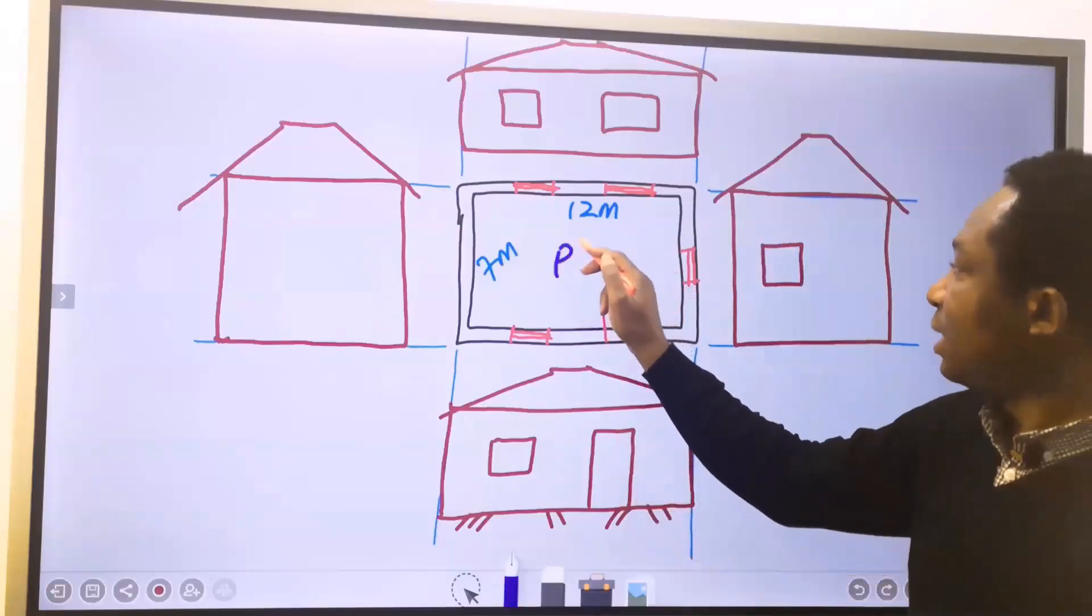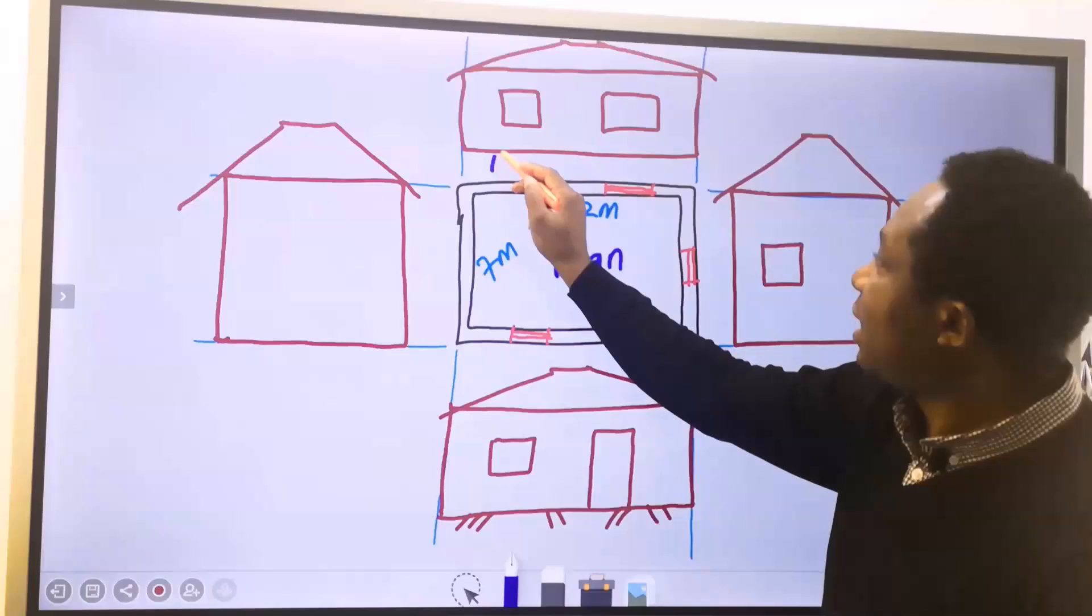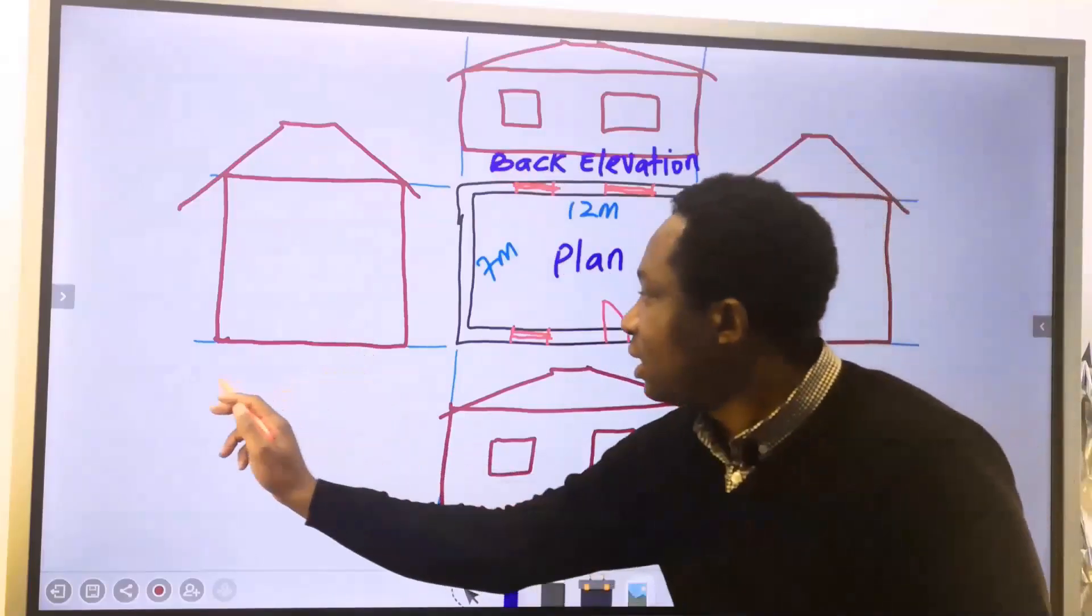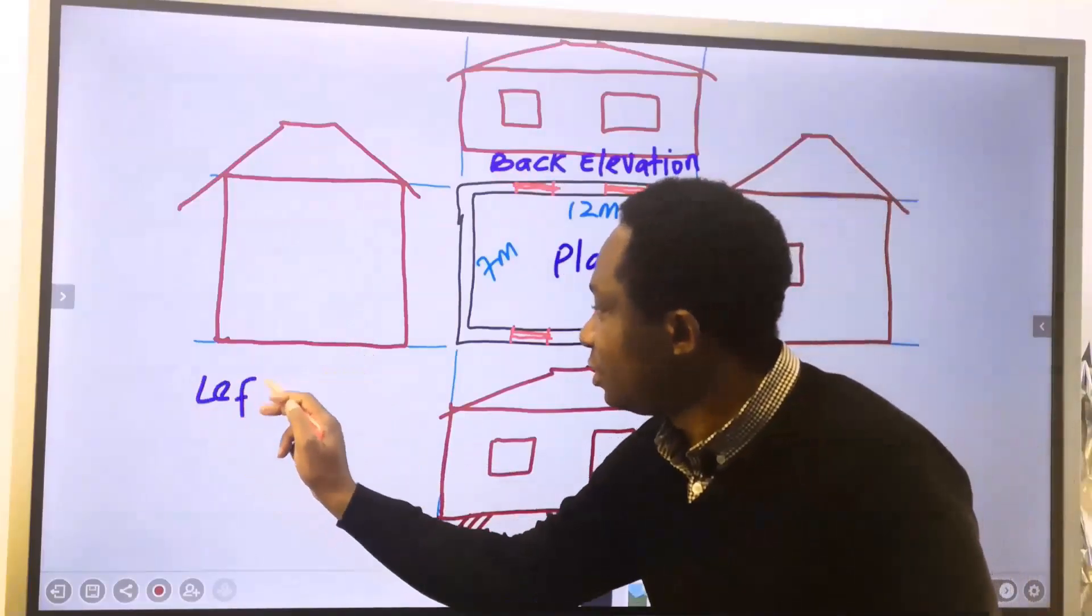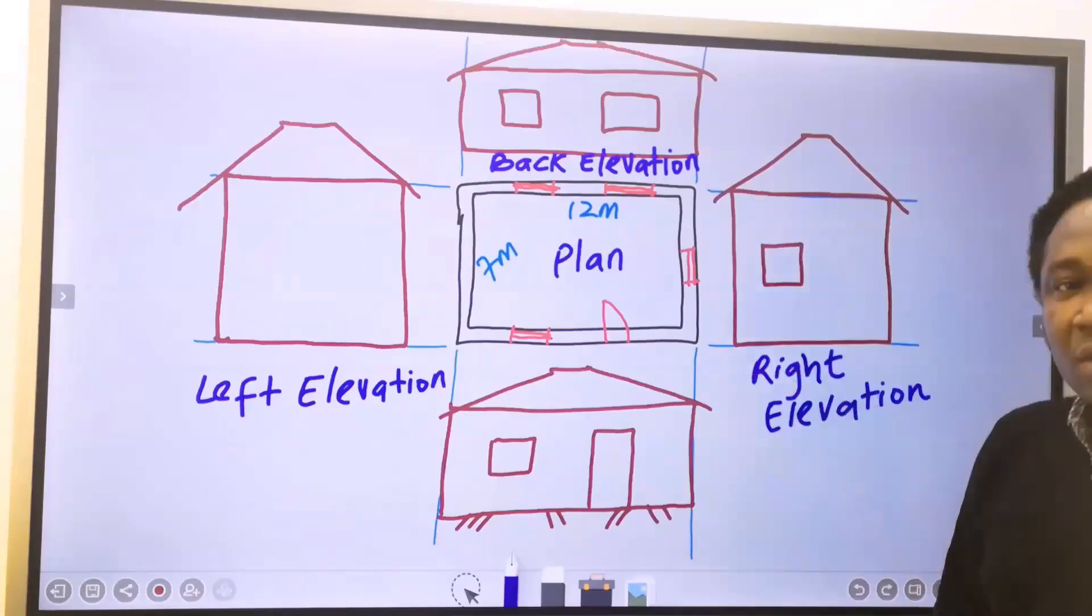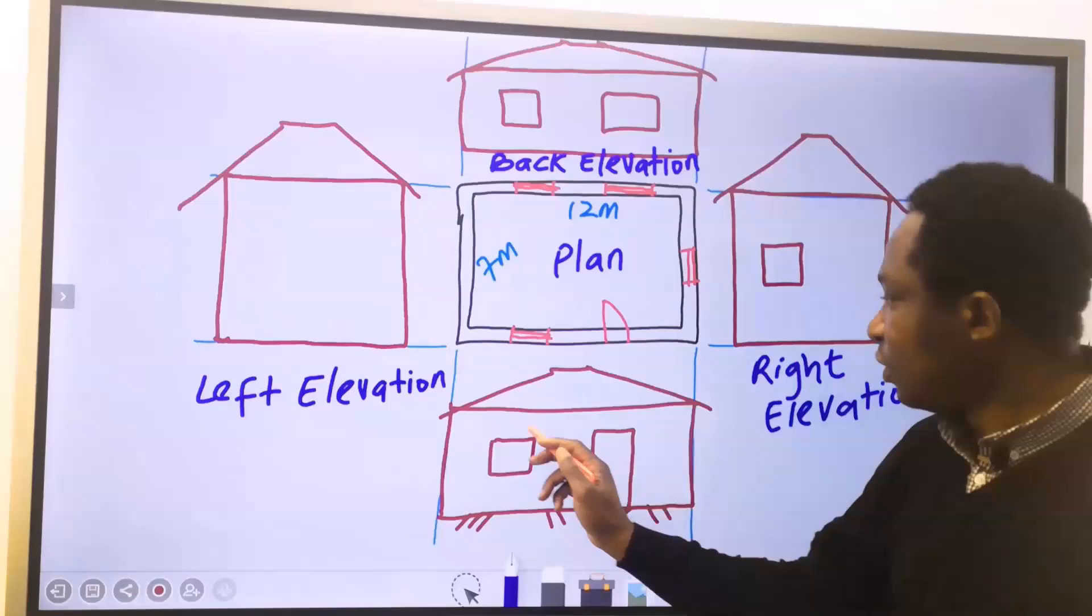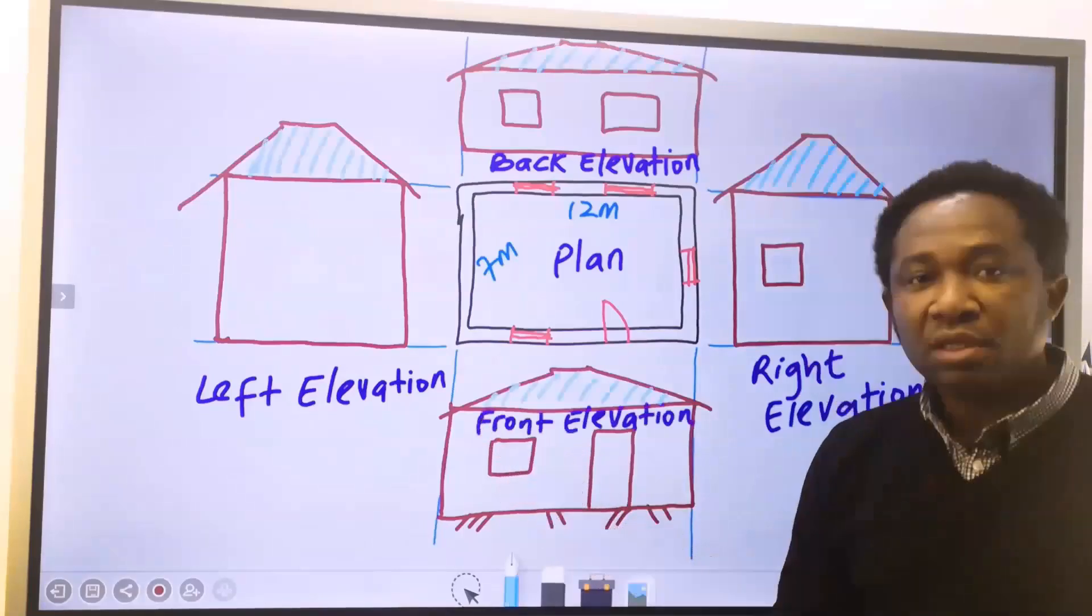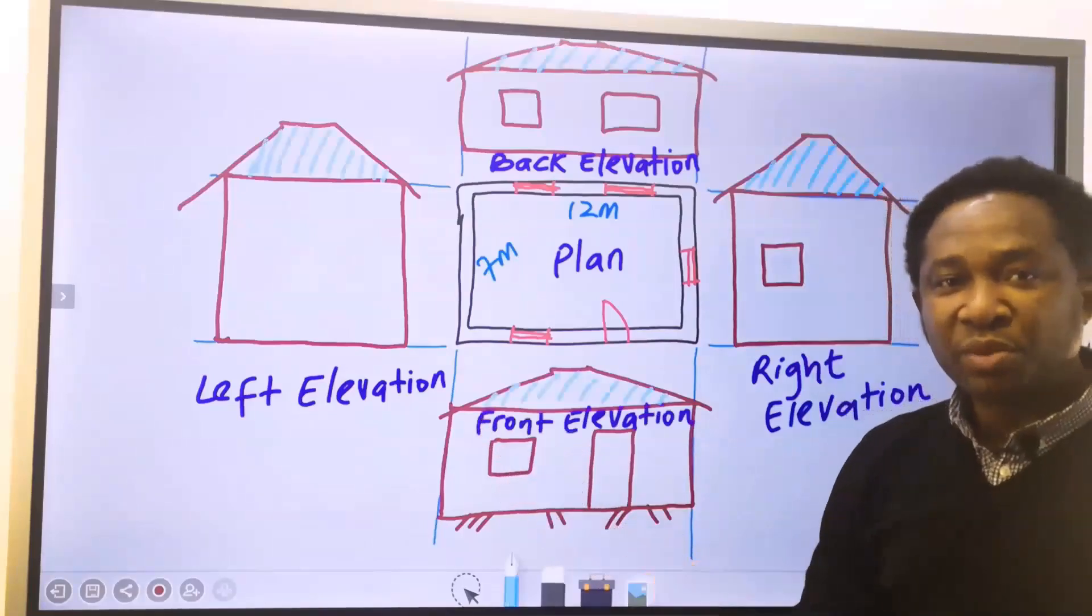Here, this is the plan. This is the back elevation. This is for the left elevation, and this is for the right elevation, while this is for the front elevation.